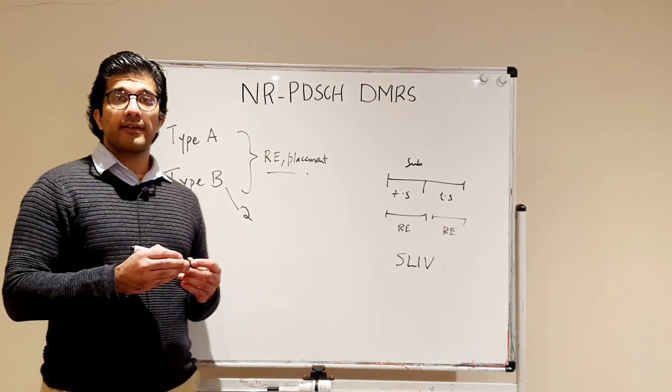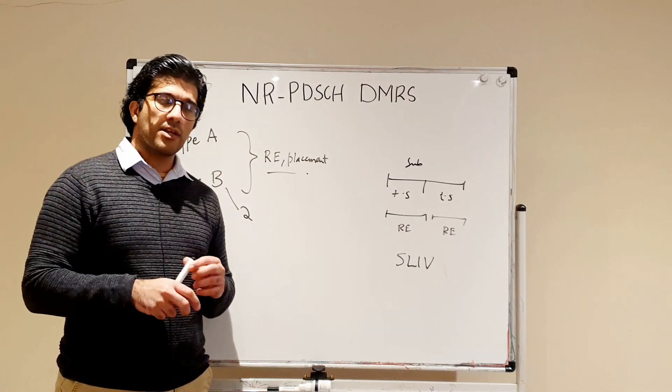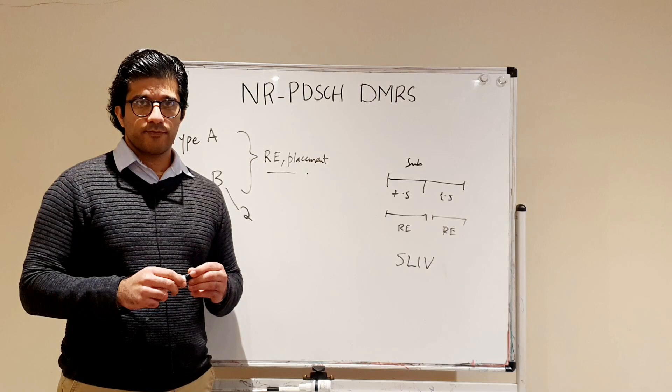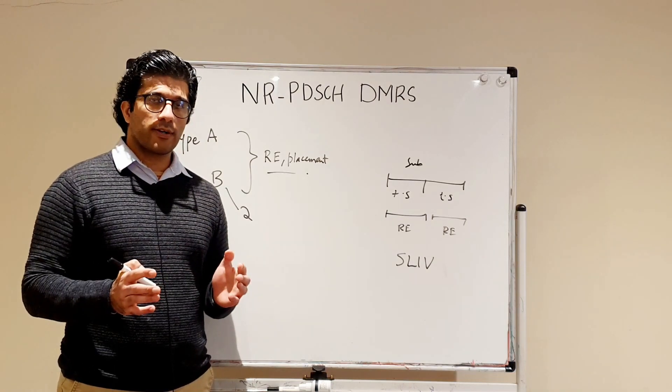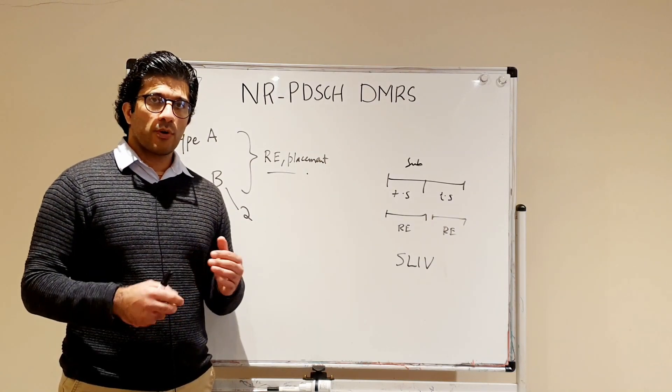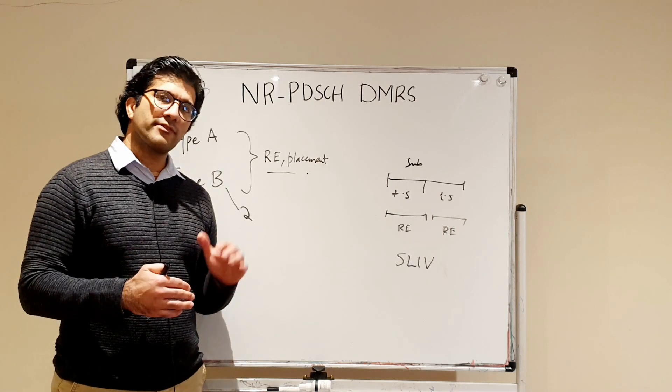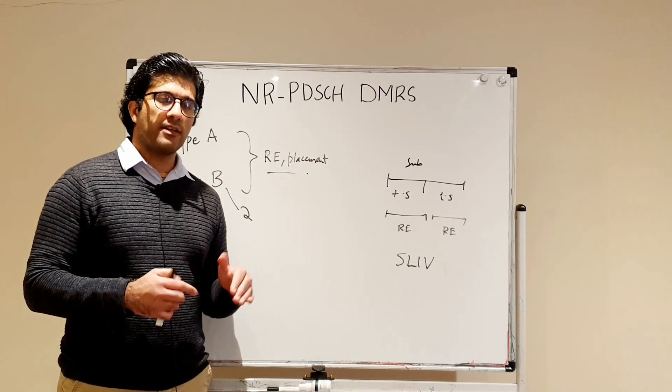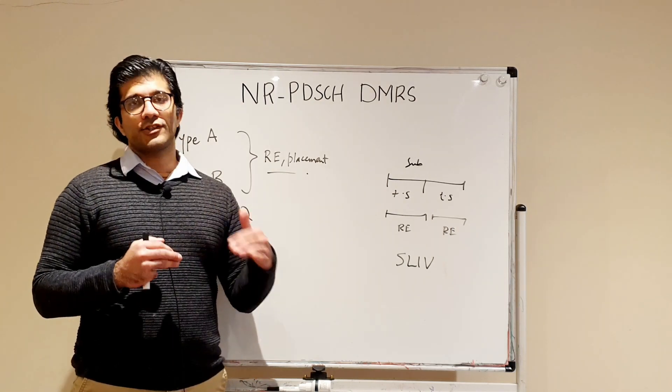The Type B DMRS always comes on the first time slot. Whatever is your allocation of your PDSCH, always the first time slot for Type B will be allocated for your demodulation reference signal.